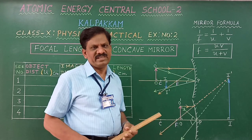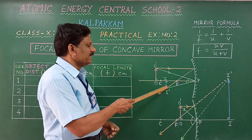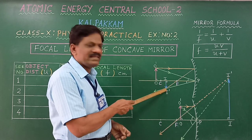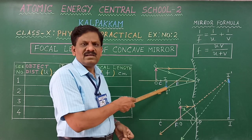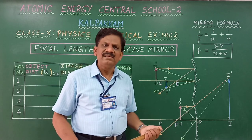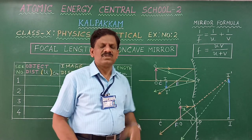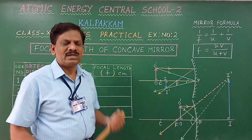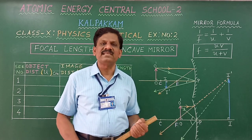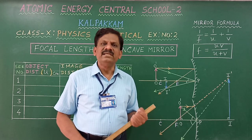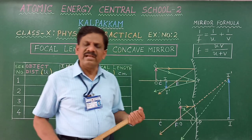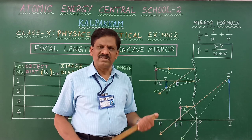This image is a diminished image because its size is smaller than the object. It is also an inverted image because it is found below the principal axis. Third, it is a real image because it can be caught on a screen.